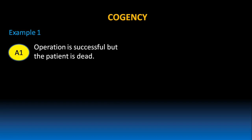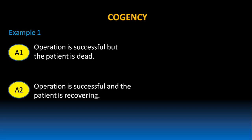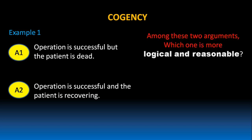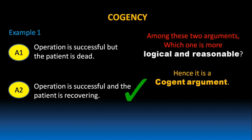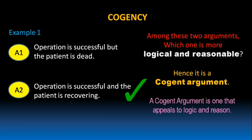Argument 1: The operation is successful, but the patient is dead. Argument 2: The operation is successful, and the patient is recovering. Among these two arguments, which one is more logical and reasonable? Obviously, Argument 2 is more logical and reasonable, because if the operation is successful, the patient has got more chances of getting recovered. Hence, it is a cogent argument. A cogent argument is one that appeals to logic and reason.